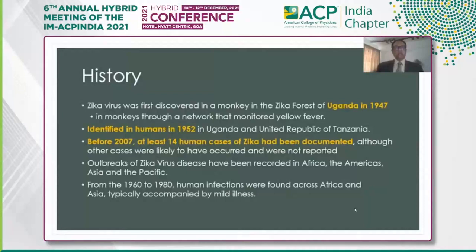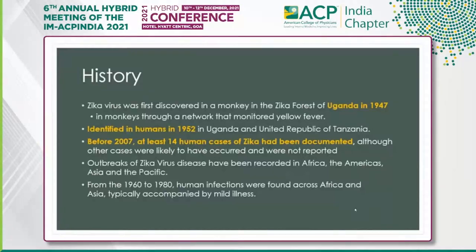Regarding the history, the Zika virus was first detected in Uganda in 1947 and identified in human beings in 1952, in both Uganda and Tanzania. Before 2007, at least 14 human cases of Zika had been documented. From the 1960s to 1980s, human infections were found across Africa and Asia, typically accompanied by mild illness.